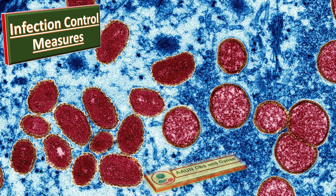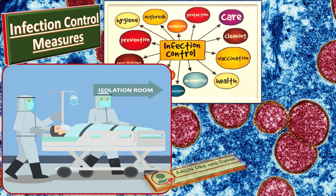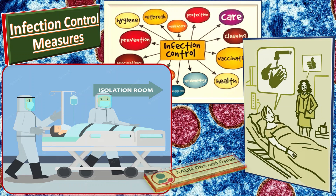Let us talk about infection control measures. The infection control practices for the care of patients who are pregnant with MPOX infection are the same as those for non-pregnant patients with MPOX. These include appropriate isolation of the patient, and training for healthcare personnel on maternity and newborn care units on correct adherence to infection control practices and PPE. Furthermore, visitors to pregnant or postpartum patients with MPOX should be strictly limited to those essential for the patient's care and well-being.